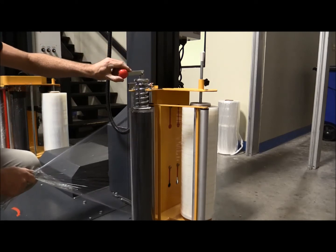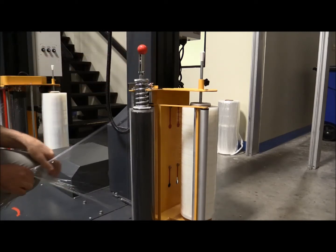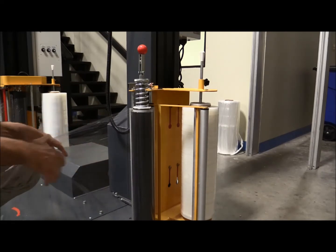Now the knob at the top is just an on and off - tension on, up is tension off, which allows you to move the film out to attach it to the next pallet.